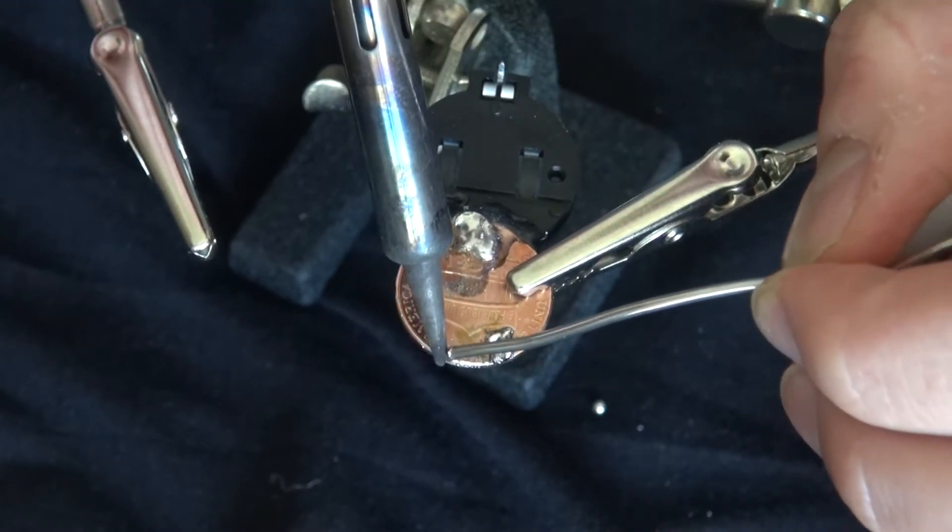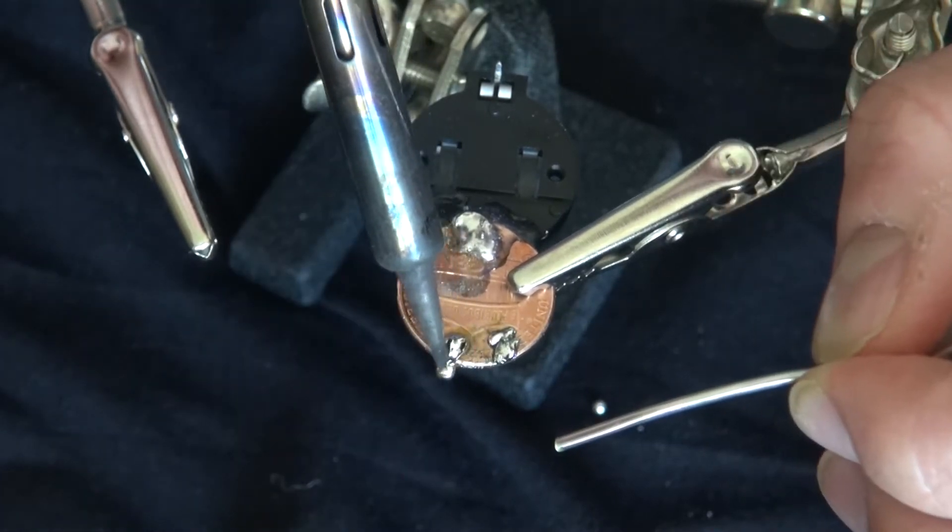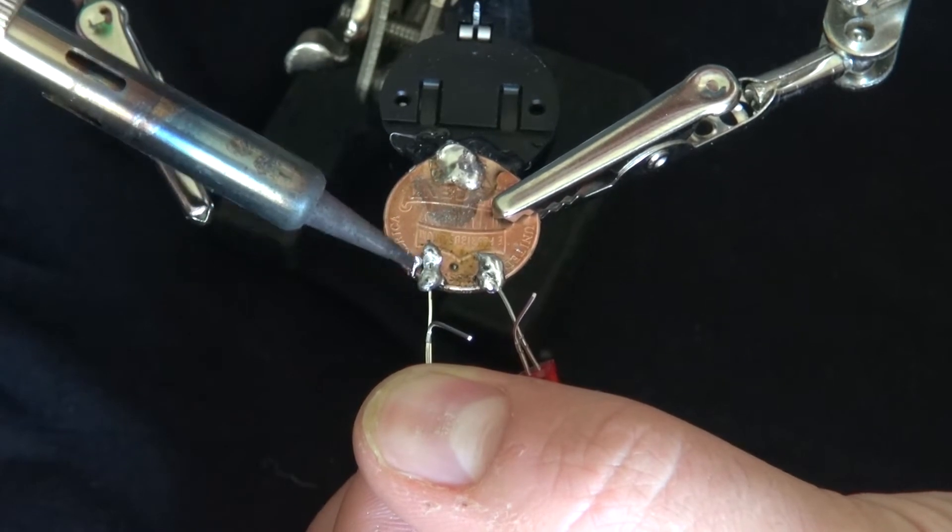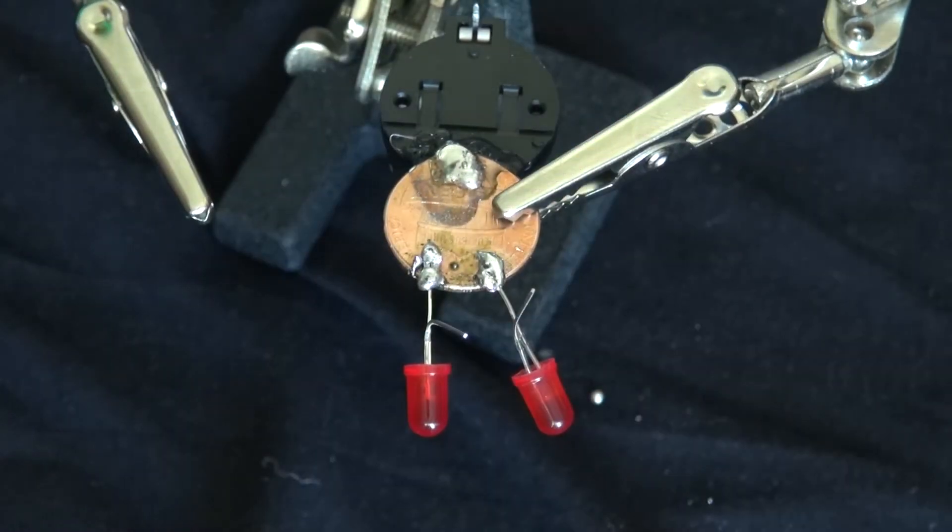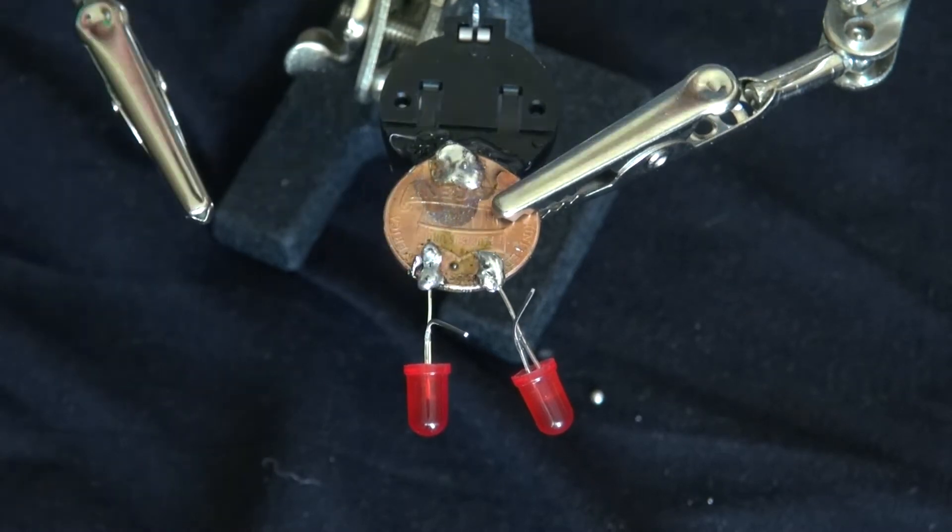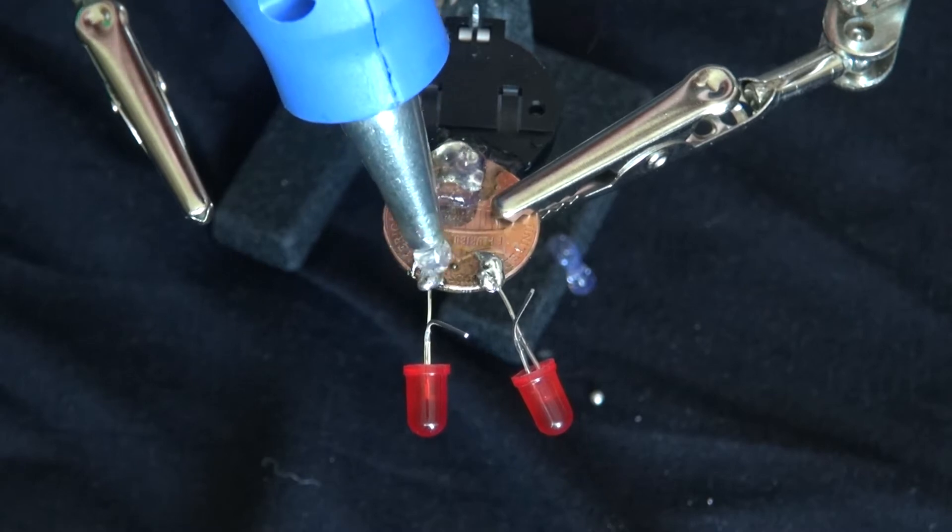Now I'm going to heat up the zinc a little bit and now I'm putting some more solder and now I'm soldering the LEDs into place. I'm soldering in the cathodes to the penny first. Now I'm going to put some hot glue on everything and that will make things extra secure.